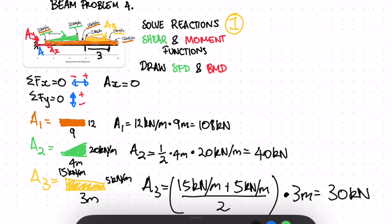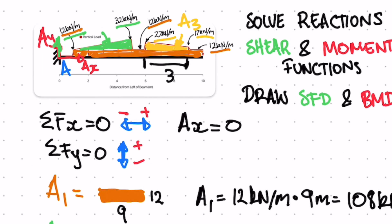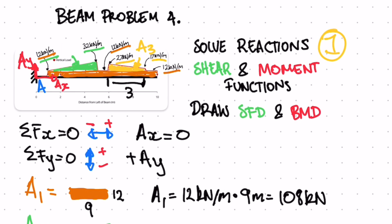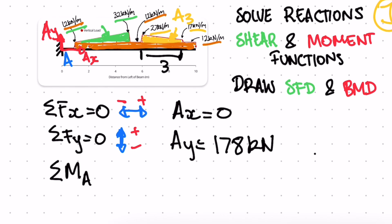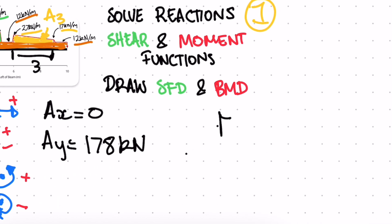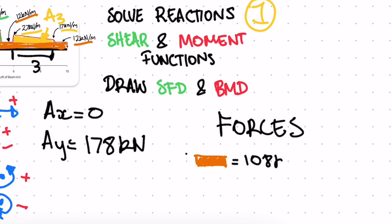Now we can write the equilibrium equations. For the y-direction: positive Ay − 108 kN − 40 kN − 30 kN = 0. For the sum of moments about point A equal to zero, taking anticlockwise as positive and clockwise as negative, we use the forces we already found: 108 kN (rectangle), 40 kN (triangle), and 30 kN (trapezoid).